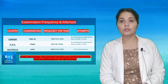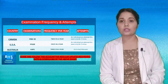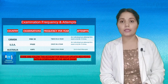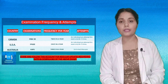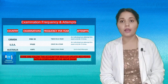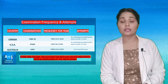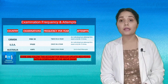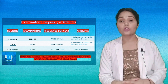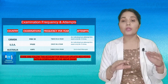The third is for Australia, and the name of the examination is KAPS — Knowledge Assessment of Pharmaceutical Sciences. The frequency per year is twice a year, and you have unlimited attempts to appear and clear this particular examination.